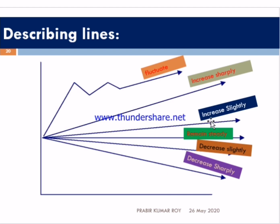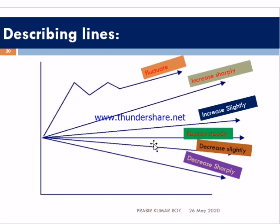These lines summarize what we have discussed. If data increases here but goes down there — increases and goes down again — this is a fluctuating situation; you can use the word 'fluctuate.' If the data increases a lot, you say 'increases sharply.' If it increases a little, you say 'increases slightly.' If the data remains the same, you say 'remains steady.' If the data goes down a little, you say 'decreases slightly.'